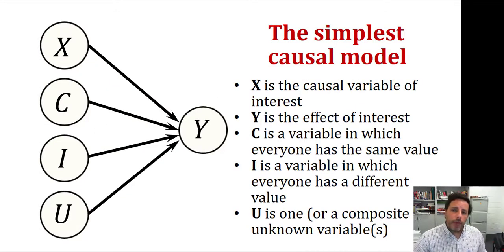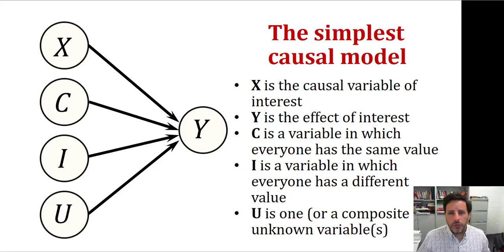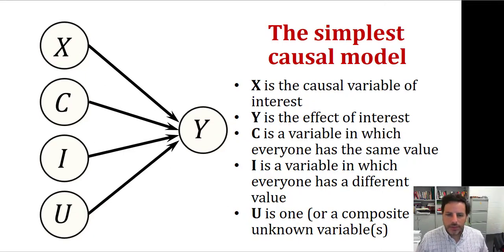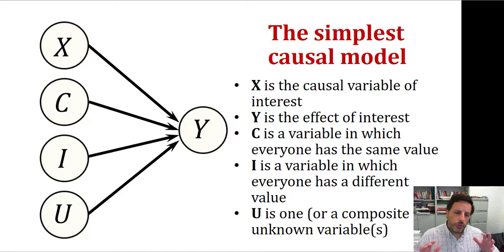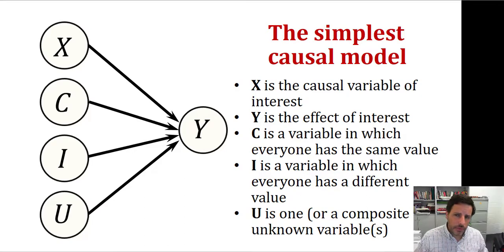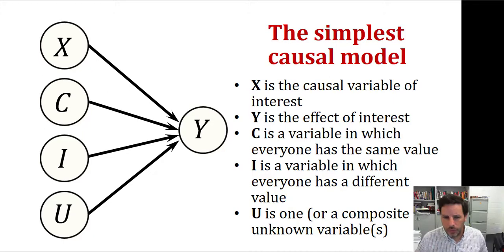I'm going to show you what I call the simplest causal model. This is important because you won't find this type of model in textbooks or from people who developed the idea of causal models. But I think it's important to take into account. In further explanations I'm going to provide later, I'm going to drop parts of this simplest model.